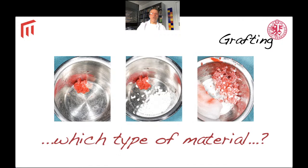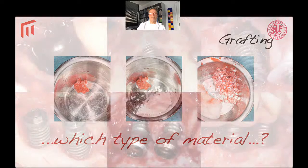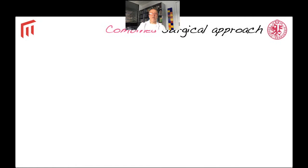Regarding grafting material, you could use autogenous bone, a substitute, or a mix. I prefer only autogenous bone because usually the defects are not so big and you can easily harvest from the neighboring area, and because we are not completely sure how biomaterials that do not resorb and stay in the tissues may react in the event of infection.